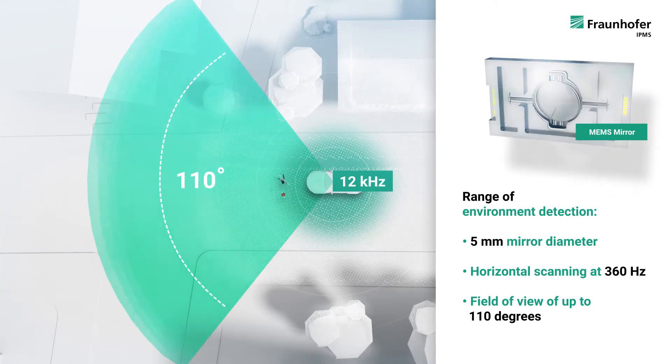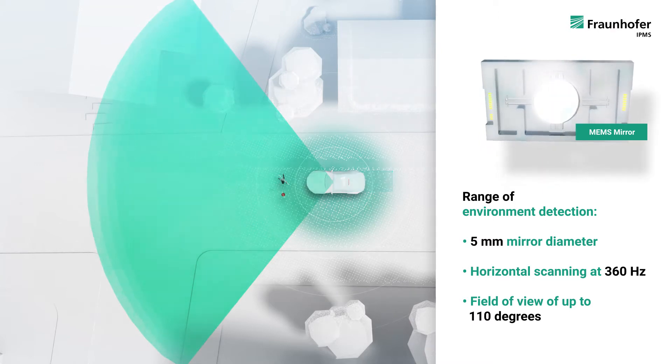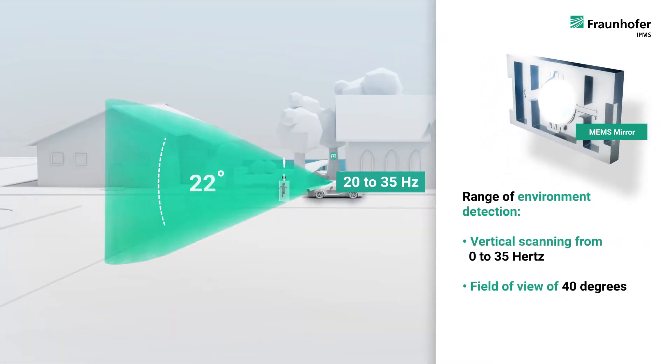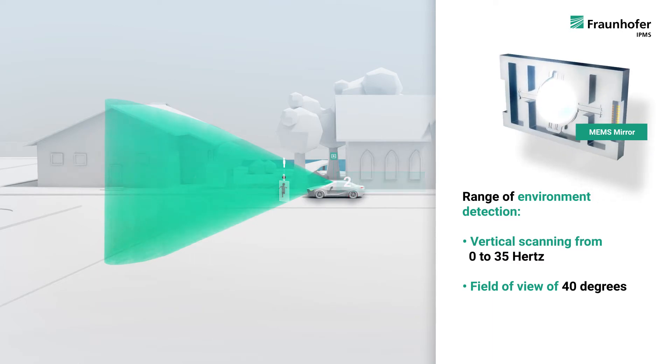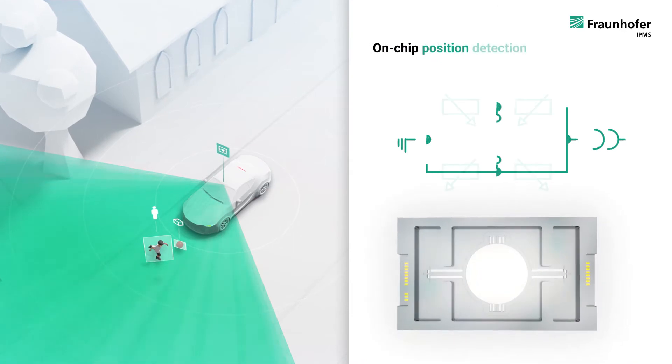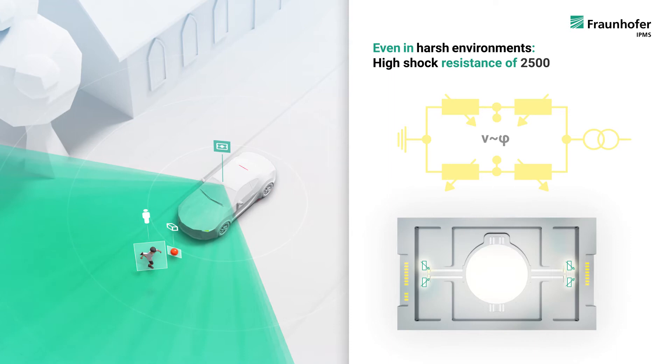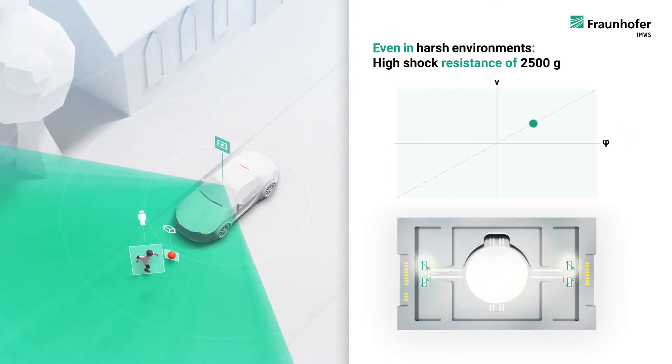The shown LiDAR MEMS mirror offers a wide horizontal and vertical scan range. Since the detection of the laser beam direction takes place directly on a chip, the environment can be detected reliably and reproducibly even in harsh environments.